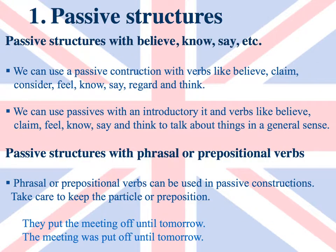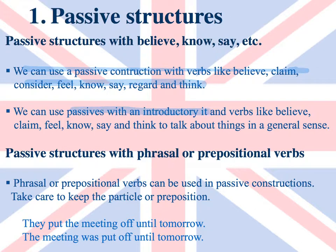Passive structures with believe, know, say, etc. With these structures we can use a passive construction with verbs like believe, claim, consider, feel, know, say, regard, and think. For instance: the family is considered to be extremely rich. We can also use passive with an introductory it and verbs like believe, claim, feel, know, say, and think to talk about things in a general sense. For example: it is claimed that the journalist made up the story.